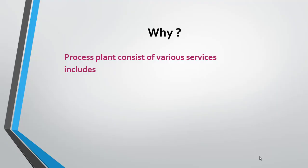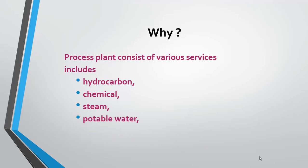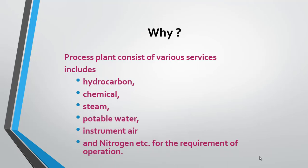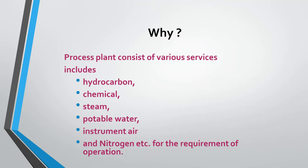We should understand why this document is required and what is its purpose. Generally, a process plant consists of various services which include hydrocarbons, chemicals, steam, potable water, instrument air, and nitrogen, etc. All these services are either used for production or for operational requirements. Each of these services is allocated an individual piping class based on material expert recommendations. Hence, the piping class of one service shall not be used for other services without the concurrence of piping material engineers, who are the authorized technical representatives to recommend a piping material.